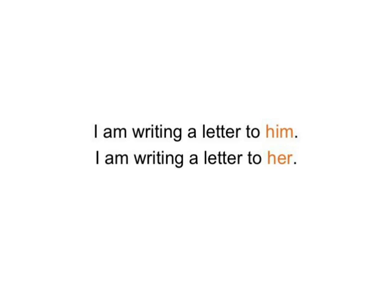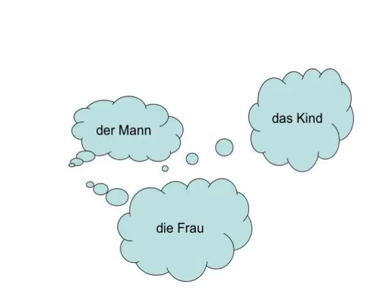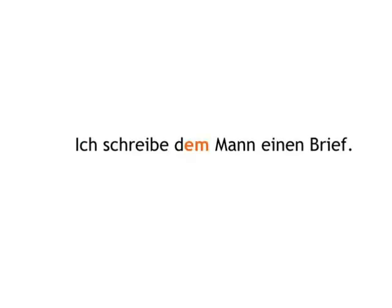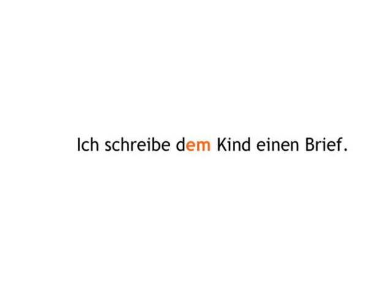But let's get back to German. Let's take the nouns: the man — der Mann, the child — das Kind, and the woman — die Frau. Write to them and see what happens. I write the man a letter: Ich schreibe dem Mann einen Brief. So the masculine singular dative ending is -IM. Remember English 'him.' I write the child a letter: Ich schreibe dem Kind einen Brief. So the neuter singular dative ending is also -IM. Again, think of the English 'him.'